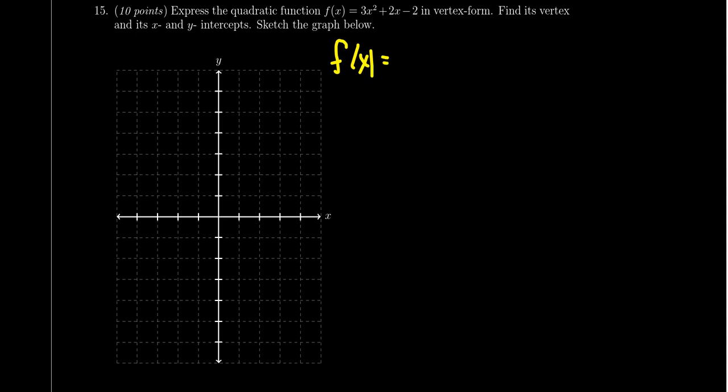So to put it in vertex form, we're going to separate the x's from the constant. So we end up with 3x squared plus 2x minus 2. You notice a gap here as I'm waiting for that guest of honor to arrive. We're going to factor out the 3, so we end up with 3 times x squared plus 2 thirds x, and then minus 2.